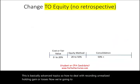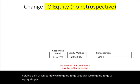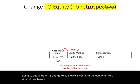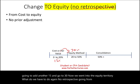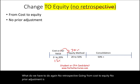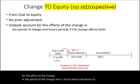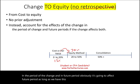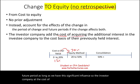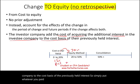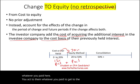Now we're going to look at going from cost to equity. Let's assume we have 15 percent and we add another 15 percent to reach 30 percent — now we're in equity territory. Again, no retrospective. Going from cost to equity, no prior adjustment is needed. Instead, account for the effect of the change in the period of the change and in future periods. The investor company adds the cost of acquiring the additional stocks to the cost basis of the previously held interest.